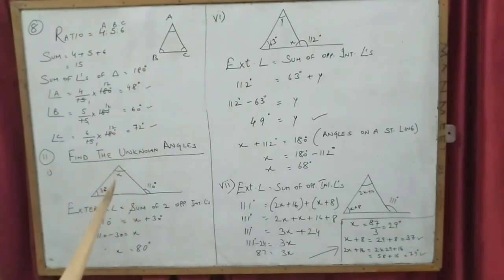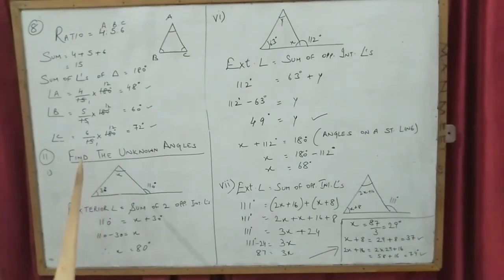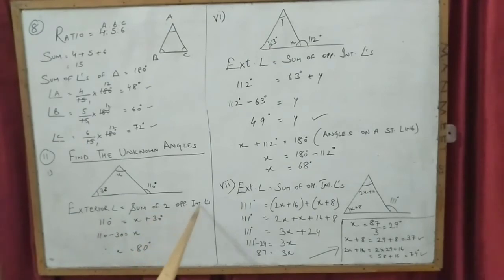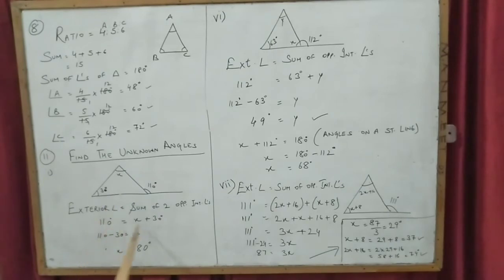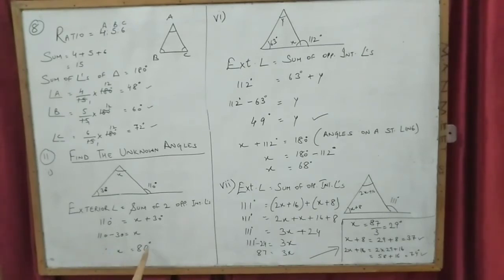Question 11: find the unknown angle x. The exterior angle property states the exterior angle equals the sum of the two opposite interior angles. The exterior angle is 110 degrees, equal to x plus 30. So x equals 110 minus 30, meaning x equals 80 degrees.